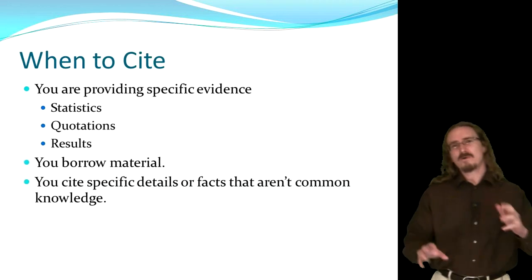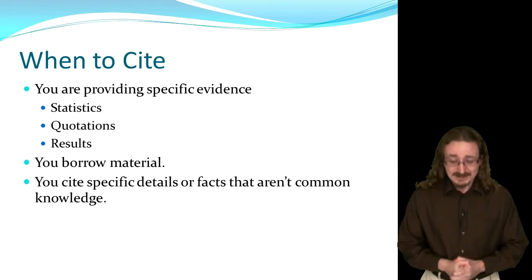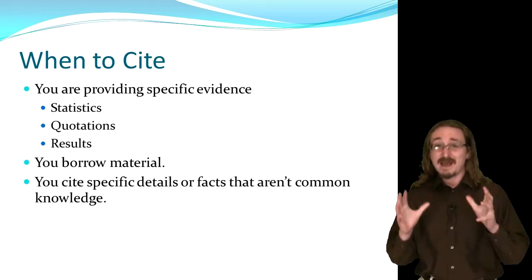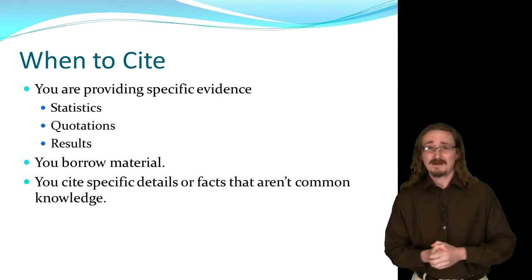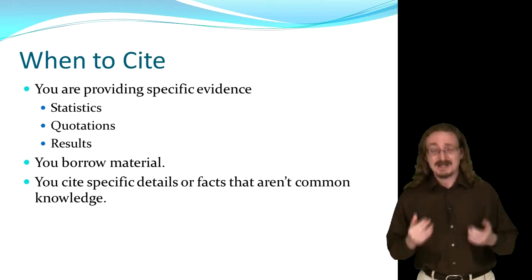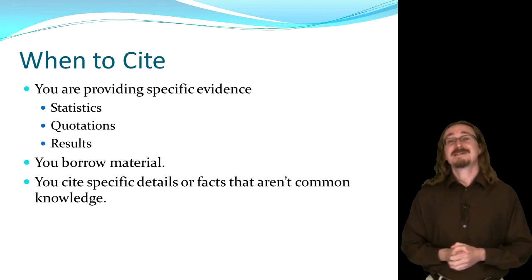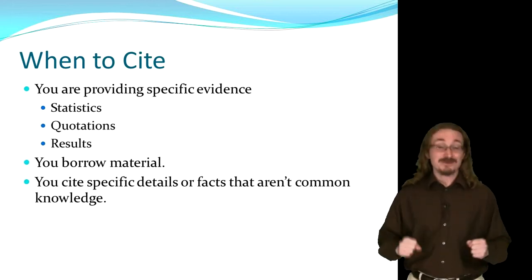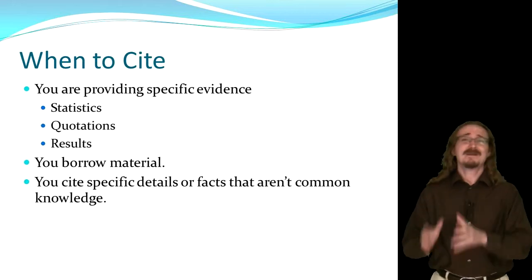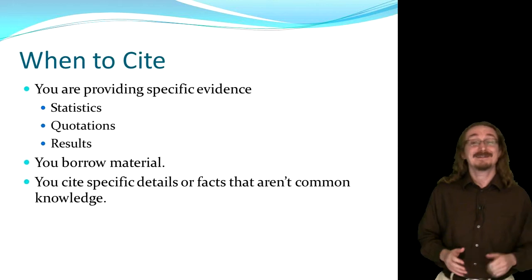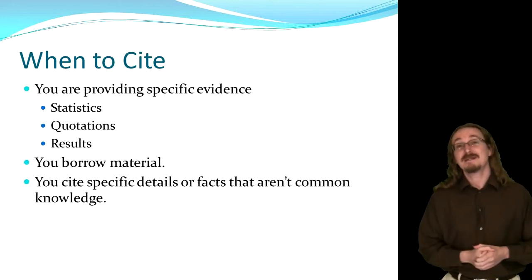Now there are a few situations where you always have to cite where you found your information. Most obvious is if you have some kind of specific evidence — some specific data that you're alleging. The most obvious one is a statistic that you quote, or a number. So if I said 12% of students don't cite sources correctly, well then you should wonder, where did you get that 12%? Whenever somebody quotes a statistic, unless they just made it up, it always has some kind of source and they need to be cited.